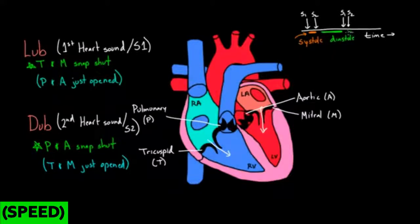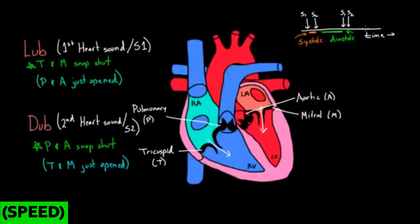Now you can actually listen to your heart and figure out: the space and time between lub and dub is systole. And if you just heard dub and you're waiting for lub again, that space and time is diastole.